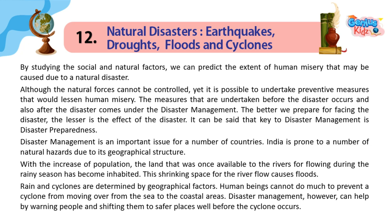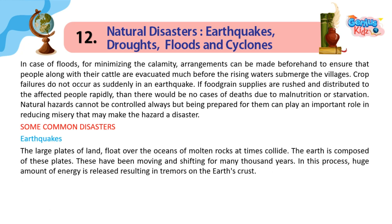Rain and cyclones are determined by geographical factors. Human beings cannot do much to prevent a cyclone from moving over from the sea to the coastal areas. Disaster management, however, can help by warning people and shifting them to safer places well before the cyclone occurs. In case of floods, arrangements can be made beforehand to ensure that people along with their cattle are evacuated before the rising waters submerge the villages. If food grain supplies are rushed and distributed to affected people rapidly, there would be no deaths due to malnutrition or starvation. Natural hazards cannot always be controlled, but being prepared can play an important role in reducing the misery that may make a hazard a disaster.